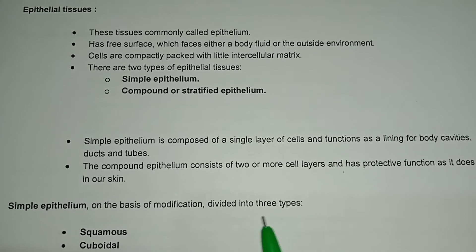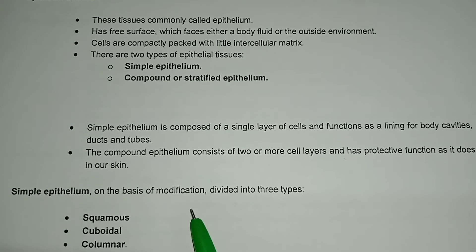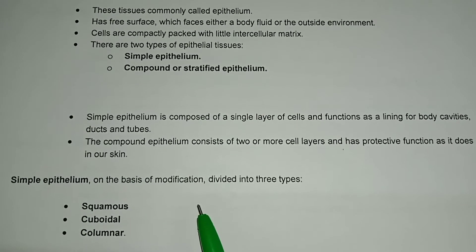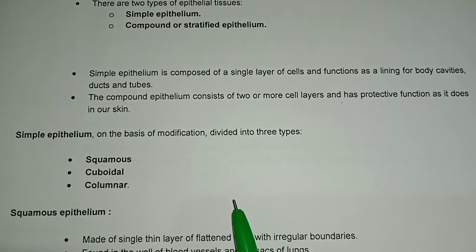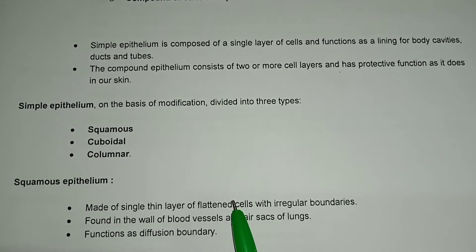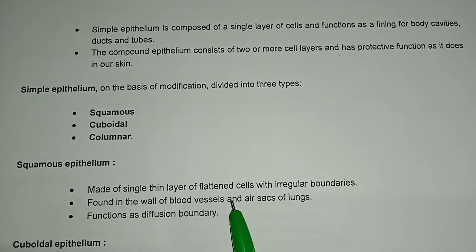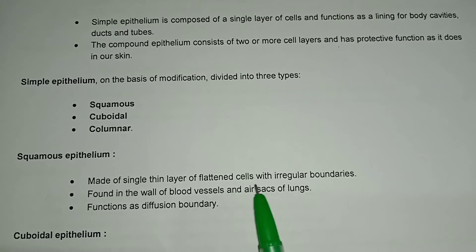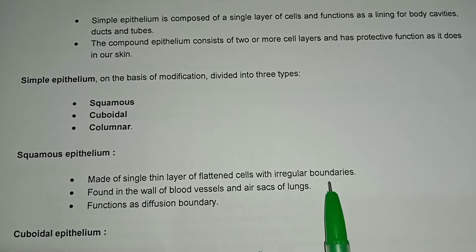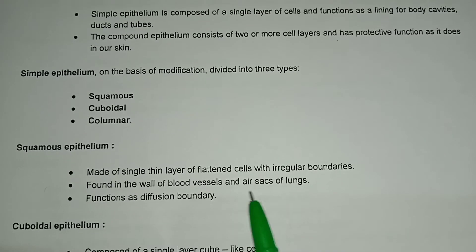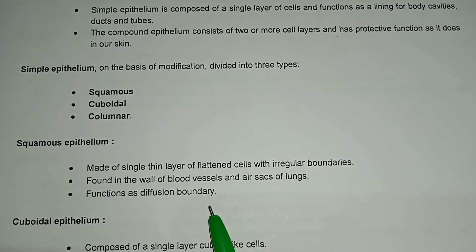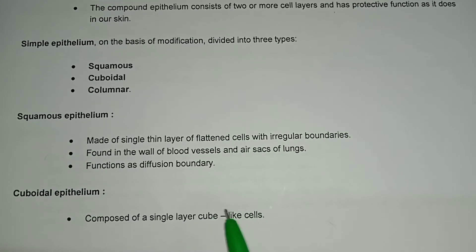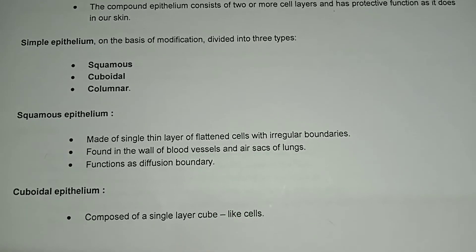Simple epithelium, on the basis of modification, is divided into three types: squamous, cuboidal, and columnar. Squamous epithelium is made of a single thin layer of flattened cells with irregular boundaries, found in the walls of blood vessels and air sacs of lungs. Its functions are diffusion and forming a boundary.